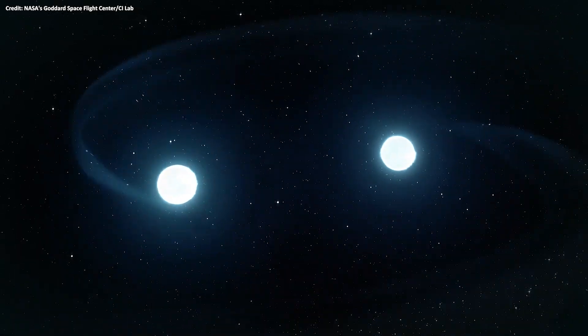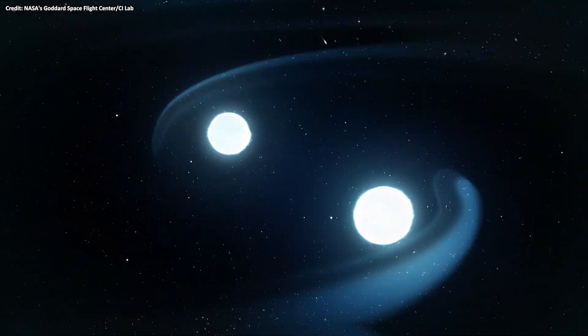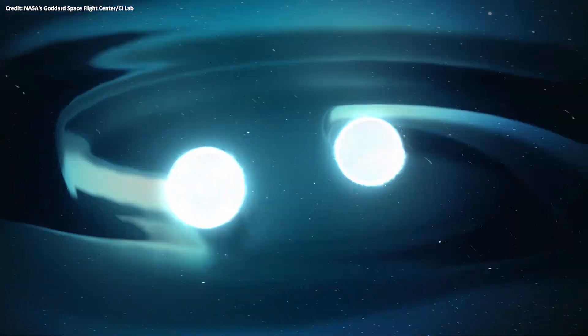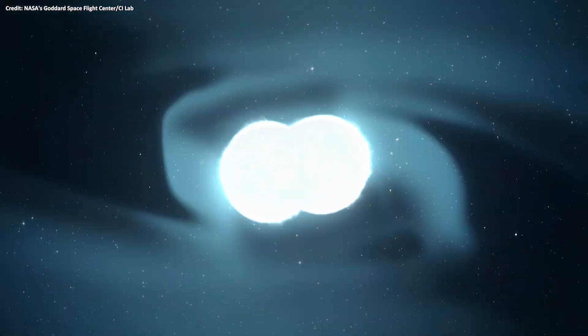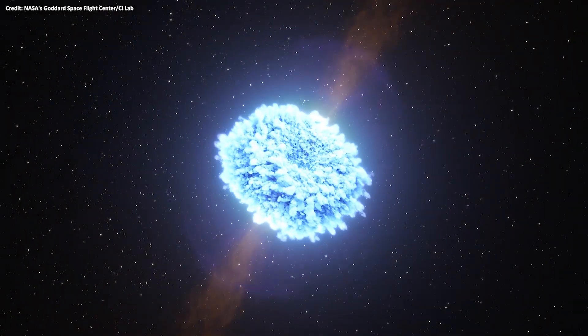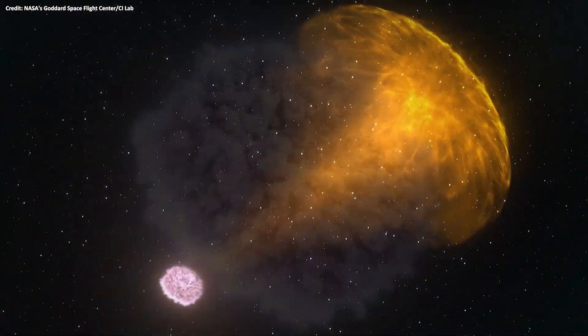But gamma ray bursts can also come from merging neutron stars. Neutron stars are the densest objects in the universe, so when two of these objects slam into each other, they release an enormous amount of energy, producing short gamma ray bursts.